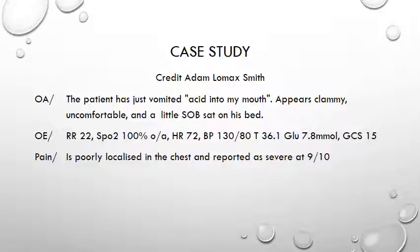The respiratory rate was 22, saturations 100% on air, heart rate 72, blood pressure normal at 130 over 80, temperature 36.1, and glucose was 7.8 millimoles — between 4 and 8 is considered normal with this measurement. GCS was 15 and the patient poorly localised the pain in their chest but reported it as severe, giving it 9 out of 10.